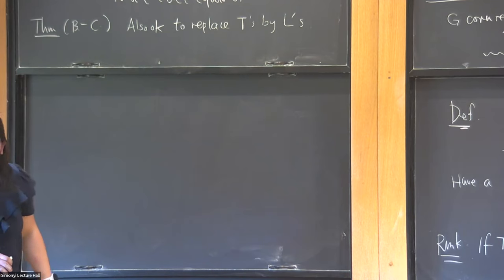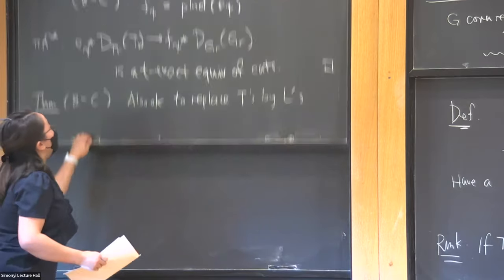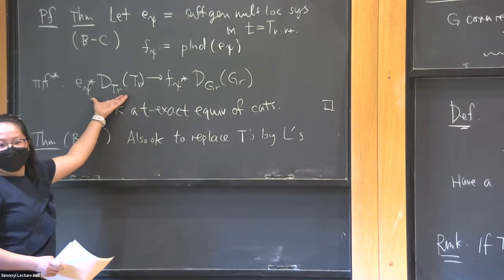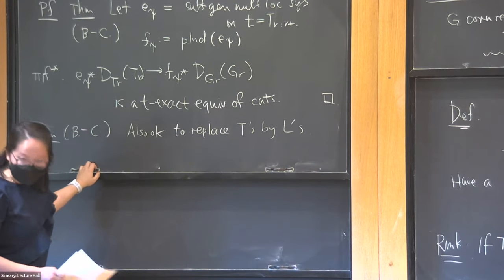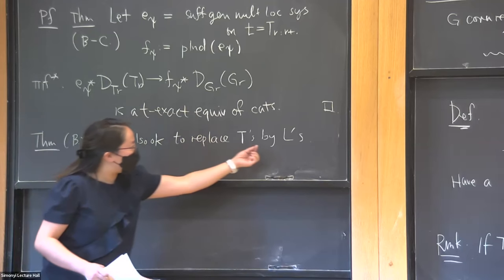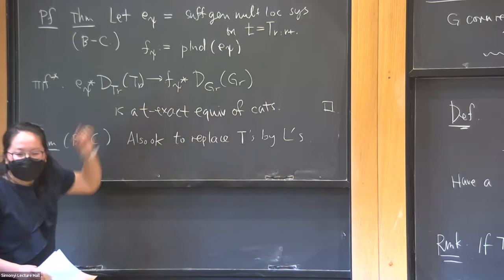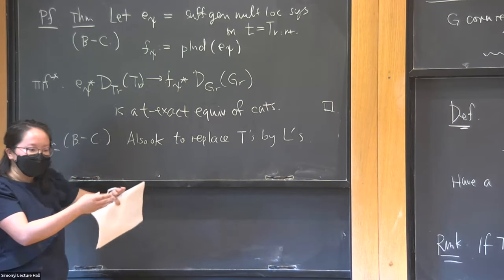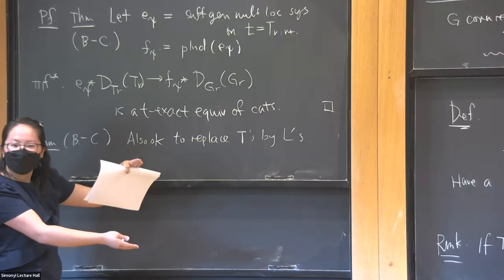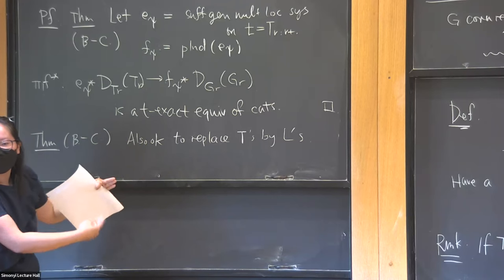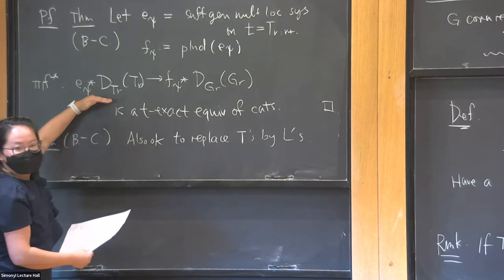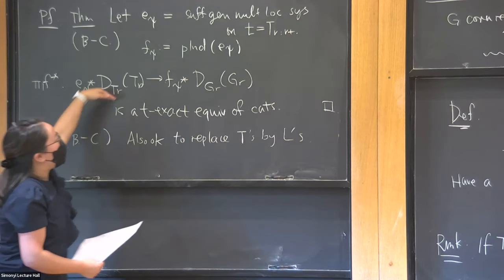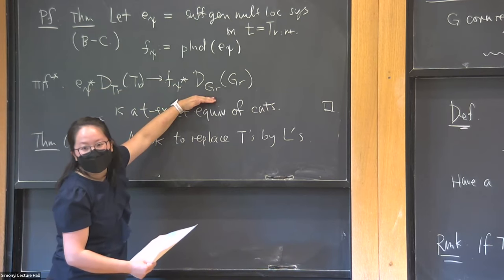What do you take on Ls? Any perverse sheaf here. For example, you can take a character sheaf on L — you have this genericity of something — so you might have to view it on this deeper L and twist by a generic multiplicative local system on L_R. That gives you something in the L-version of this generic subcategory. Then you take parabolic induction and you now get something on the bigger group.